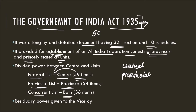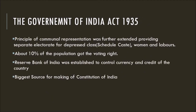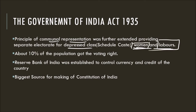The residuary powers — that is, all remaining subjects — were given to the Viceroy. The Act further extended the principle of communal representation by providing separate electorates for the depressed class, women, and labor. About 10% of the population got the voting right. They also established the Reserve Bank of India to control the currency and credit of the country. This Act is the biggest source for the making of the Constitution of India.